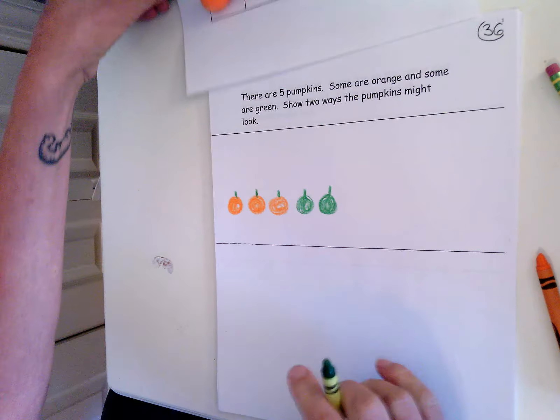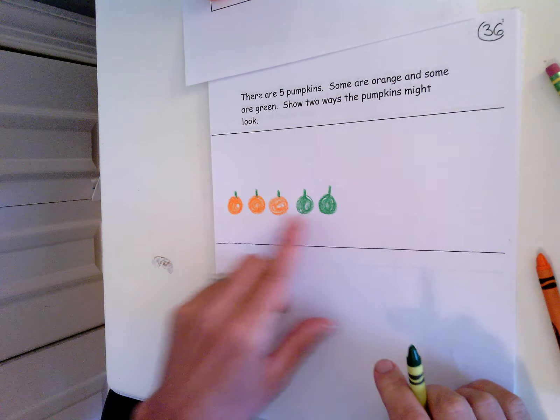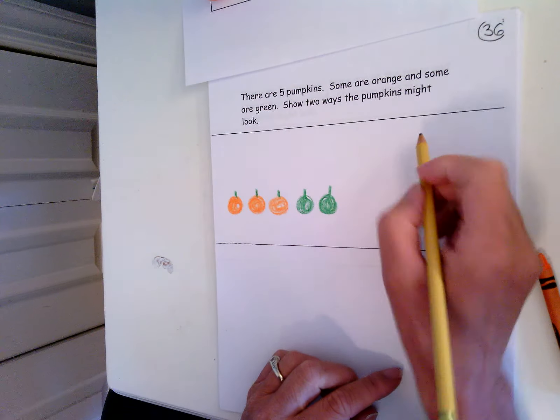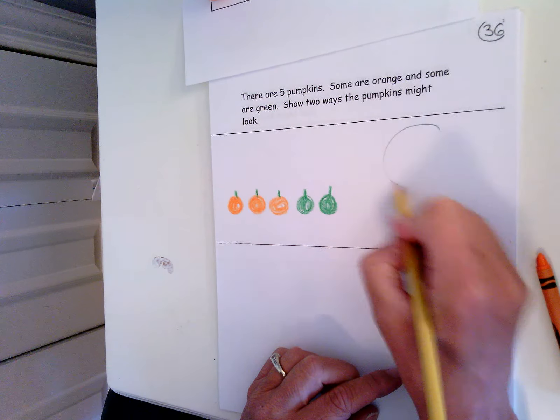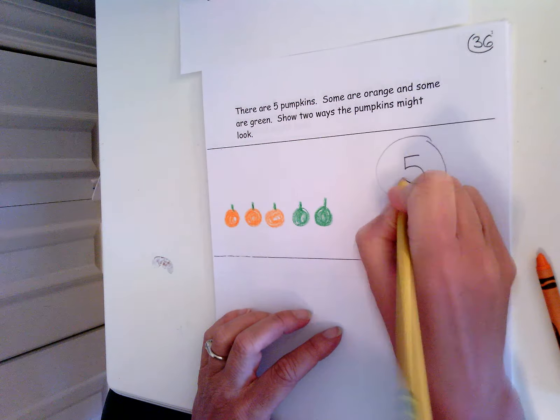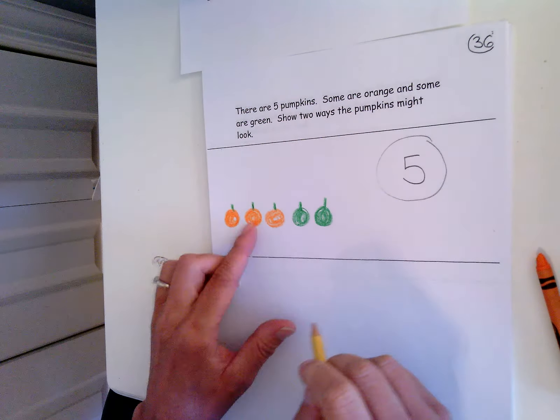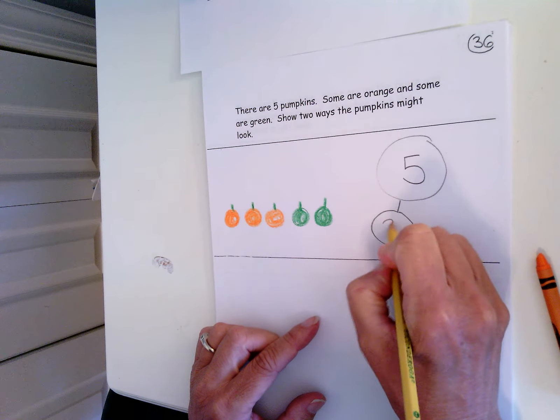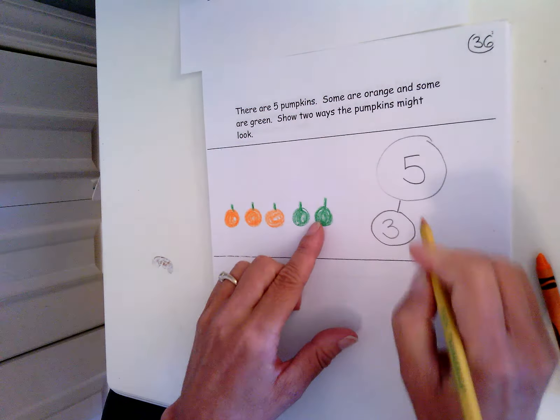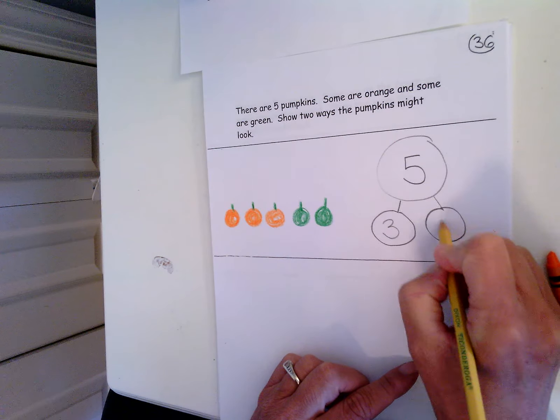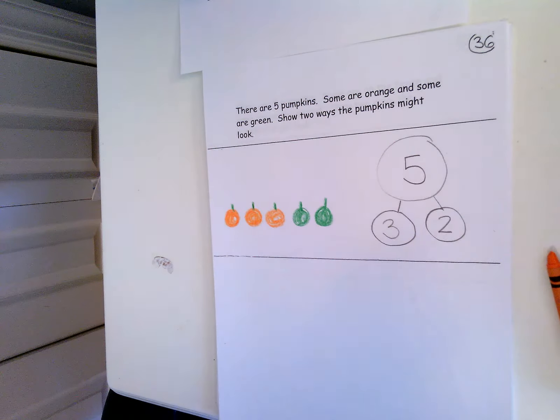So I have five pumpkins. Three are orange and two are green. So my whole number, how many pumpkins I had in all, is five. And then I have one, two, three that are orange and one, two that are green.